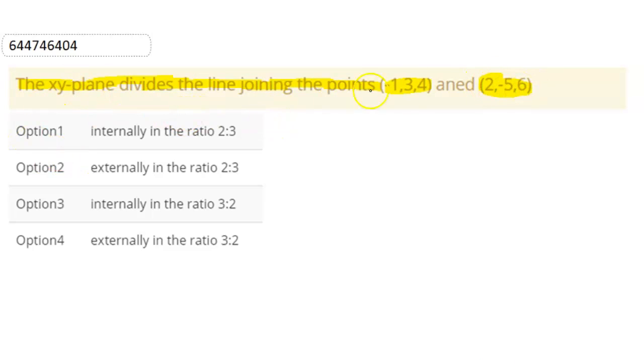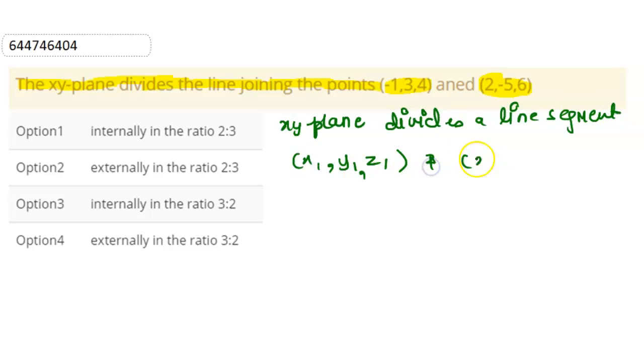So we know that XY plane divides a line segment. We will write here: XY plane divides a line segment formed by the two points (X1, Y1, Z1) and (X2, Y2, Z2) is -Z1:Z2. Right. This is what our main formula.